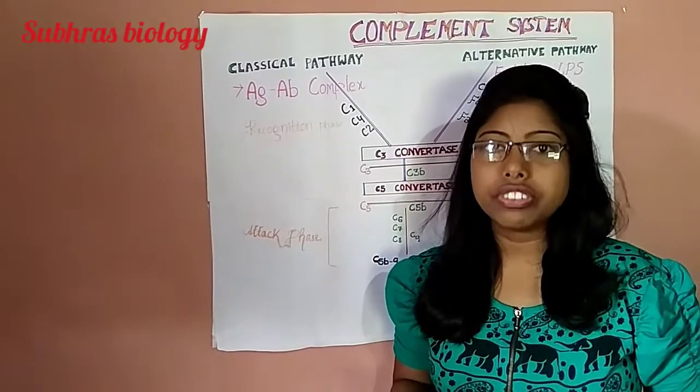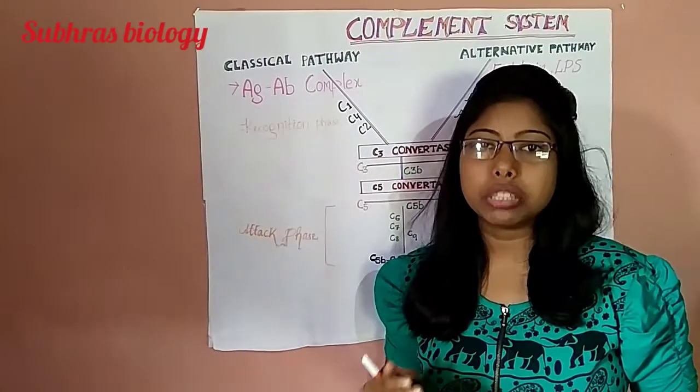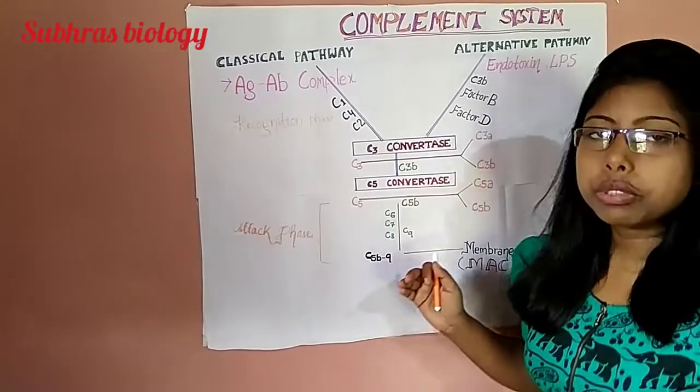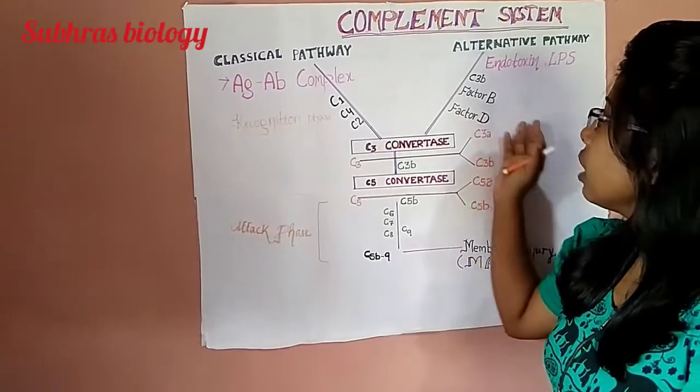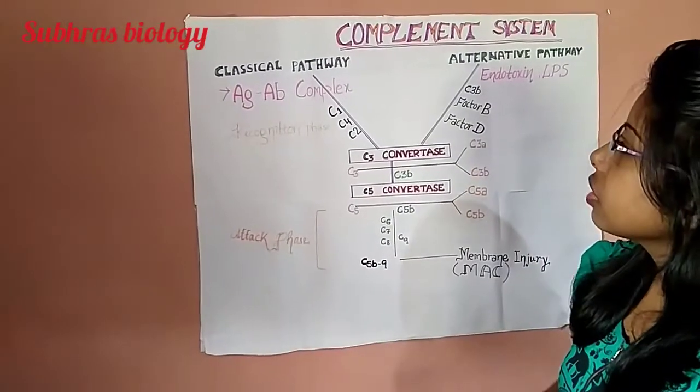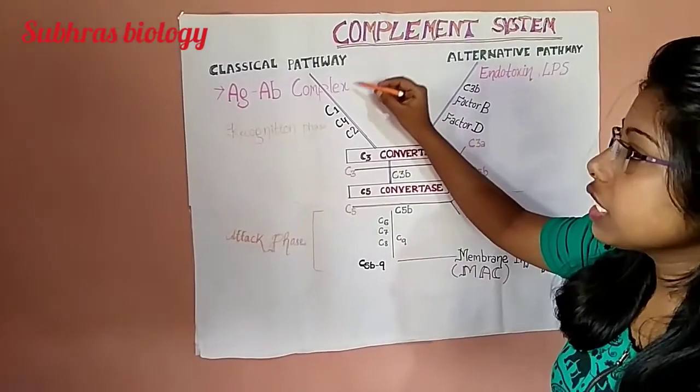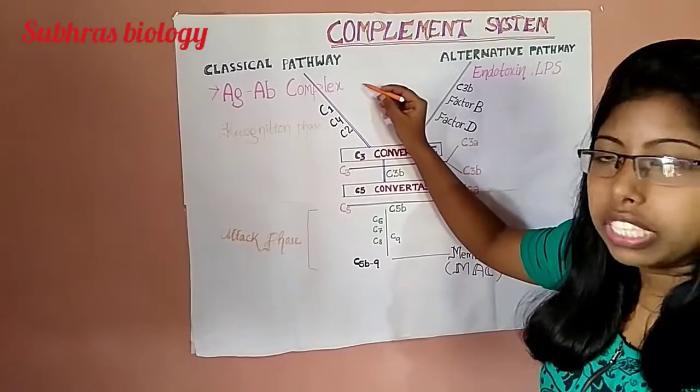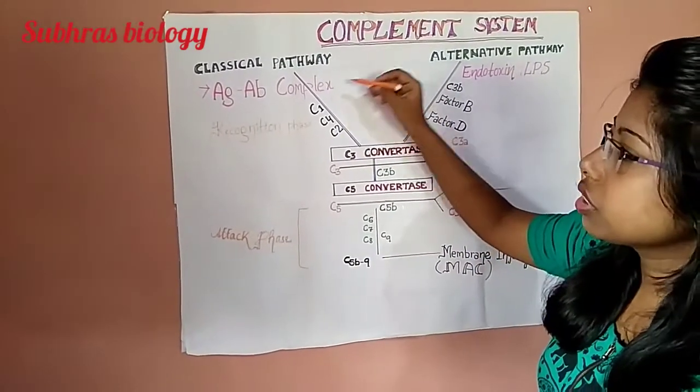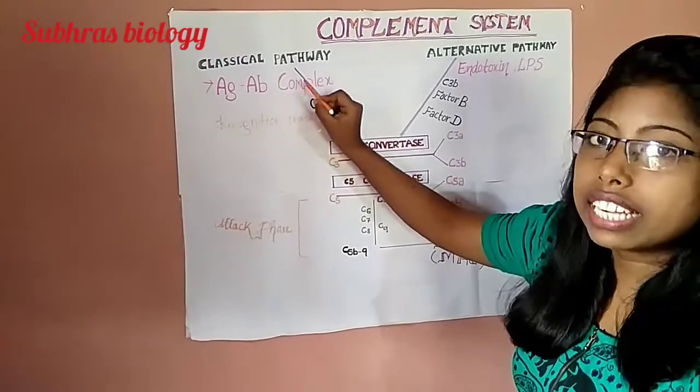When they are activated or induced by some antigen-antibody complex, complement acts upon the human body in two pathways. Classical pathway is induced or activated by antigen-antibody complex.